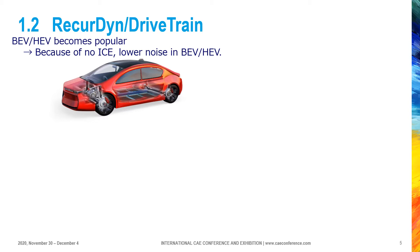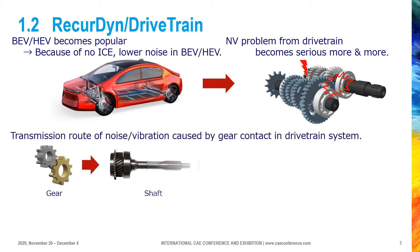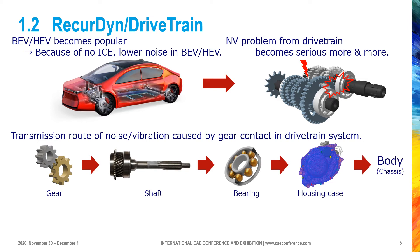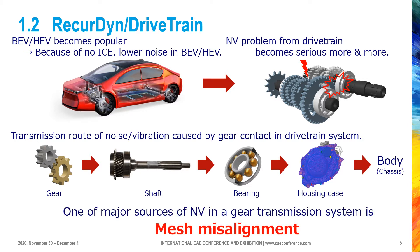Nowadays, NV problem in the drivetrain area is becoming more and more serious, because BEV and HEV are becoming popular in the automotive industry. Noise and vibration caused by gear contact is transmitted to a chassis through shafts, bearings, and housing case. Mesh misalignment is one of the major sources of NV in a gear transmission system.